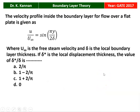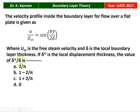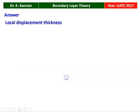The next question is from the 2017 question paper. The velocity profile inside the boundary layer for flow over a flat plate is given by U/U∞ equals sin(pi·y / 2·delta), where U∞ is the free stream velocity and delta is the local boundary layer thickness. If delta* is the local displacement thickness, find the value of delta*/delta. The correct option is 1 minus 2/pi, and we will see how in the next slide.